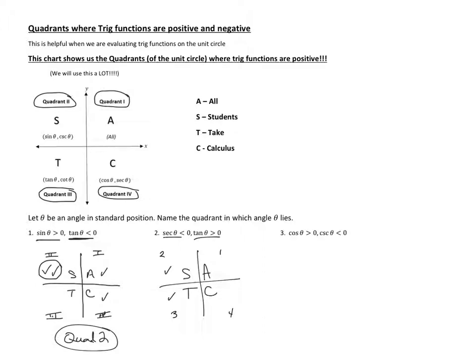That was secant. Now let's look at tangent. Where is tangent greater than 0, which is positive? Well, we know it's definitely positive in quadrant 1 and positive in quadrant 3. So the quadrant that satisfies both situations is quadrant 3. So quadrant 3 is my answer.